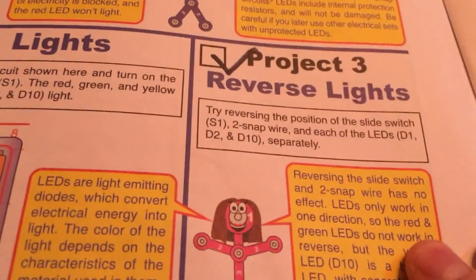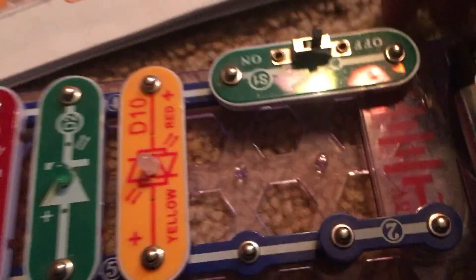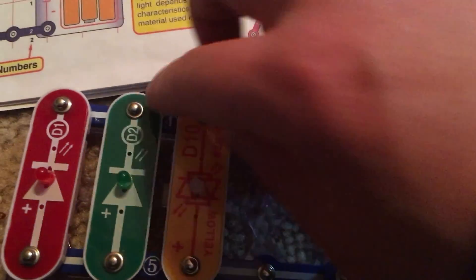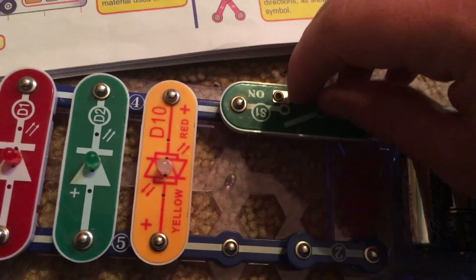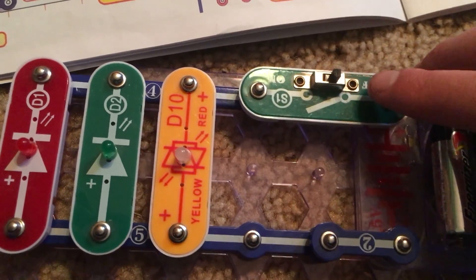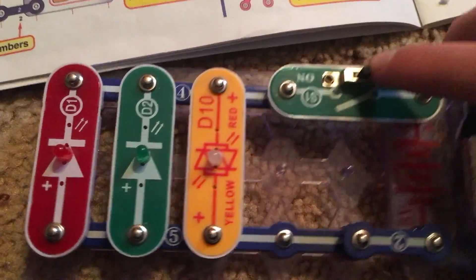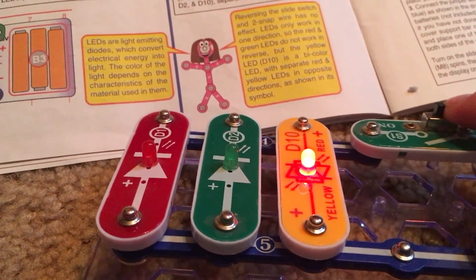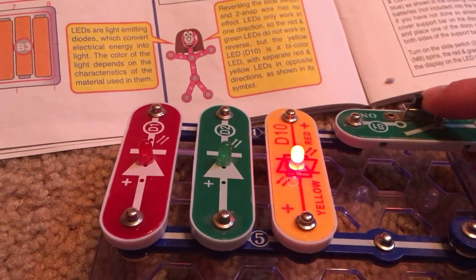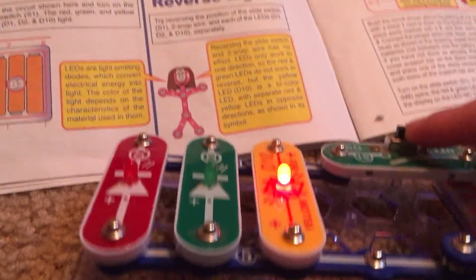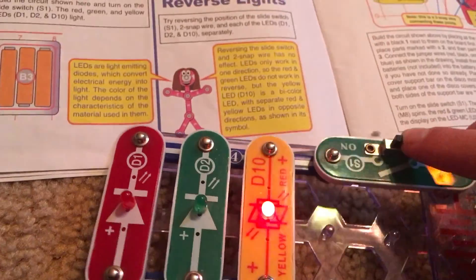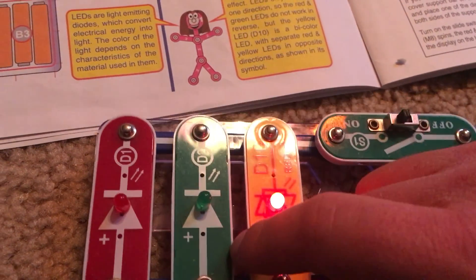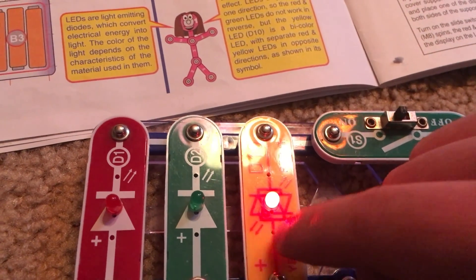Project 3 is Reverse Lights. What they wanted me to do was switch every main component, the switch, the two-snap wire, and all three LEDs, so that they are now in the opposite direction. And then I'm going to turn on the slide switch, and let's see what happens. The D1 and D2 LEDs do not come on, but the D10 LED does, and it is red instead of yellow. That is because D10 is actually a bi-color LED, and it has two separate LEDs, one red and one yellow, inside of it.